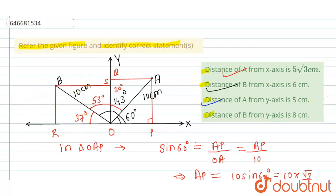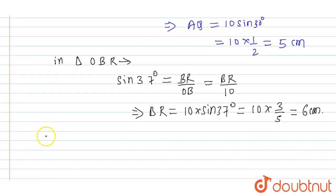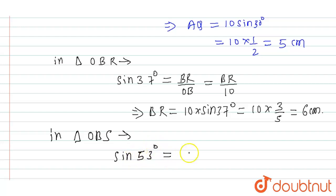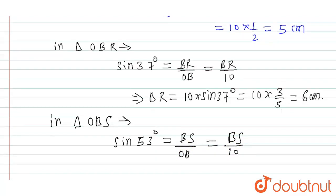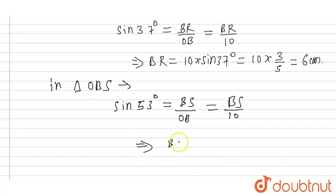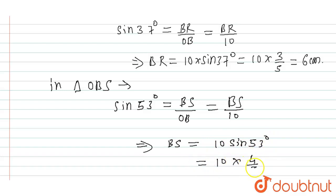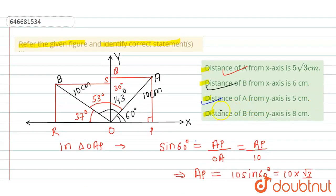Now in triangle OBS, I can write: sin 53° = BS / OB = BS / 10, which implies BS = 10 × sin 53° = 10 × (4/5) = 8 centimeters. The distance of B from the y-axis is 8 centimeters. So all four options are correct.